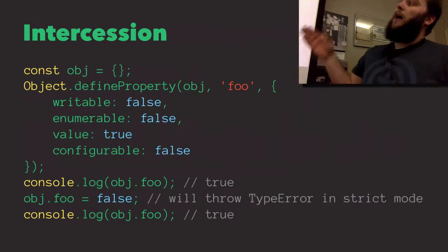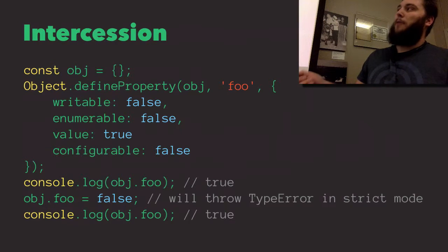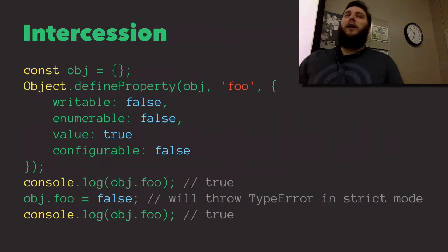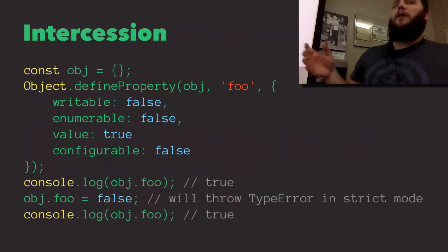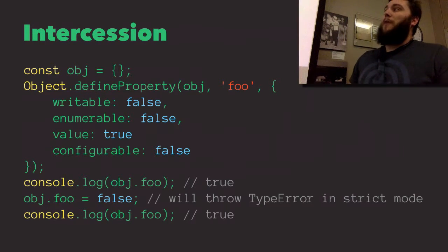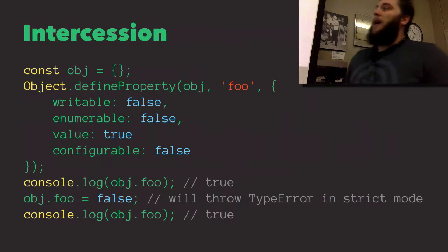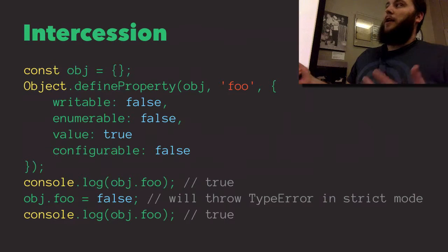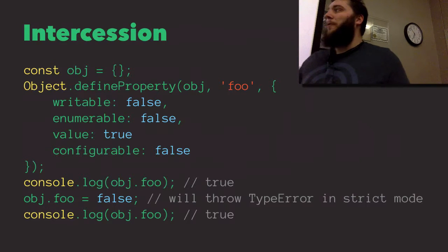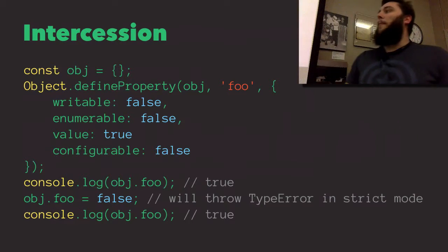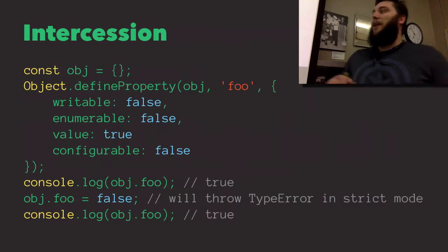Another example is using defineProperty and property descriptors to change the way the language works. I've got an object and I'm going to define a property on it called foo. I pass the object to Object.defineProperty for foo and pass it a property descriptor object to change the meaning of the foo property. I can set whether it's writable — making it a read-only property — whether it's enumerable, the value (setting it to true), and whether it's configurable. When I try to set it and writable is false, nothing happens. In strict mode, it would throw a TypeError.